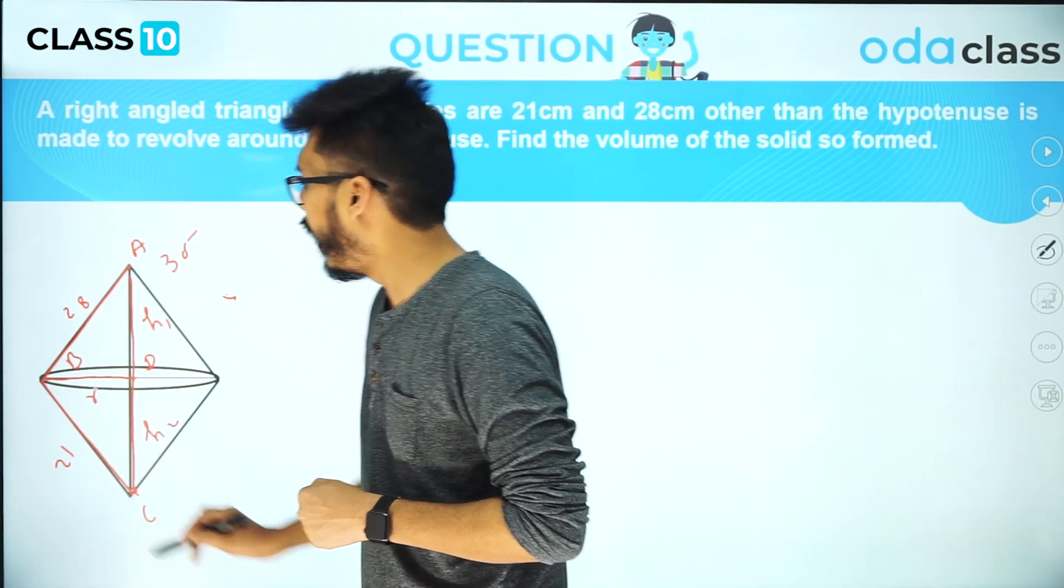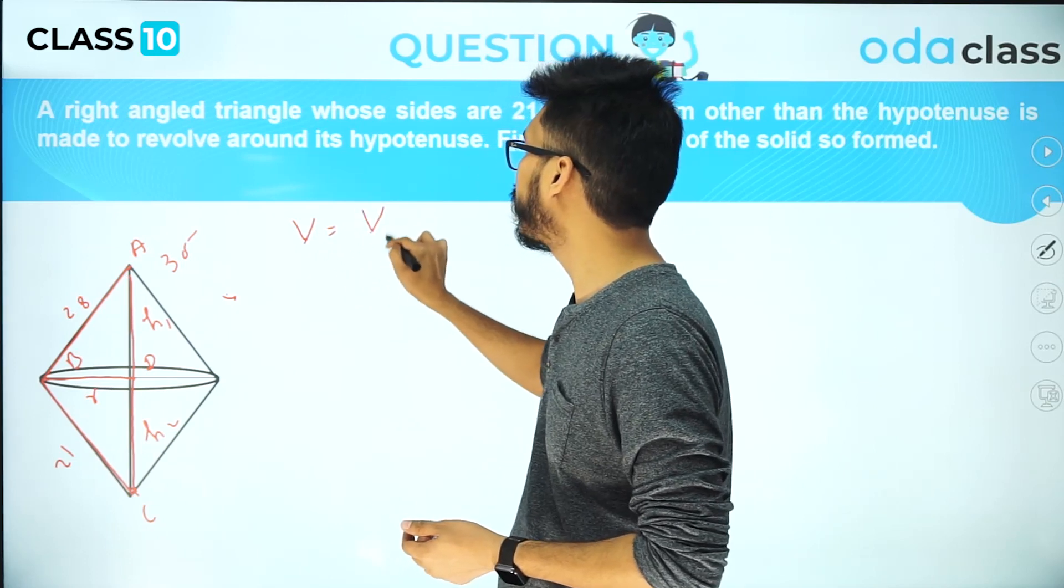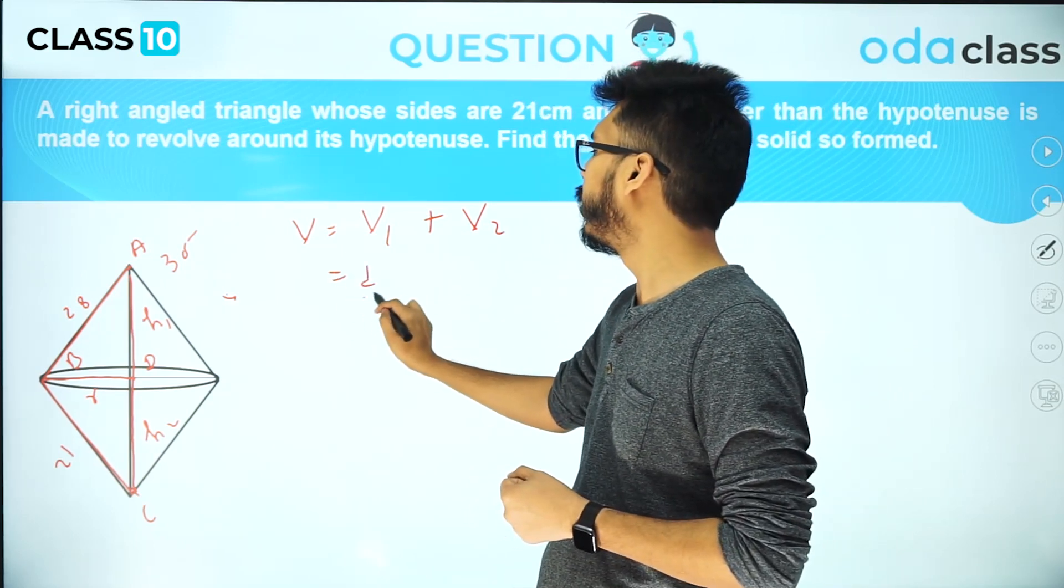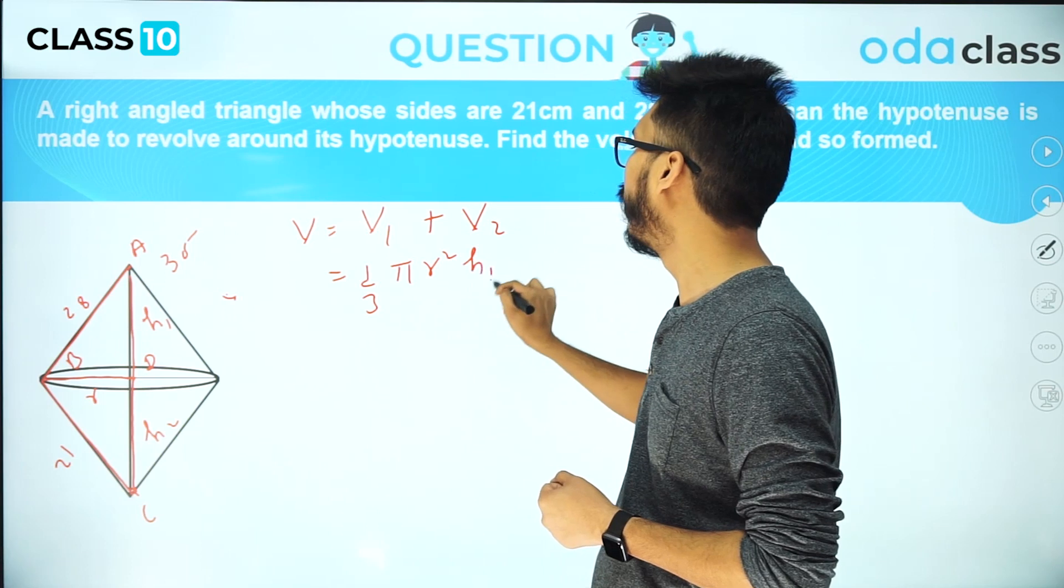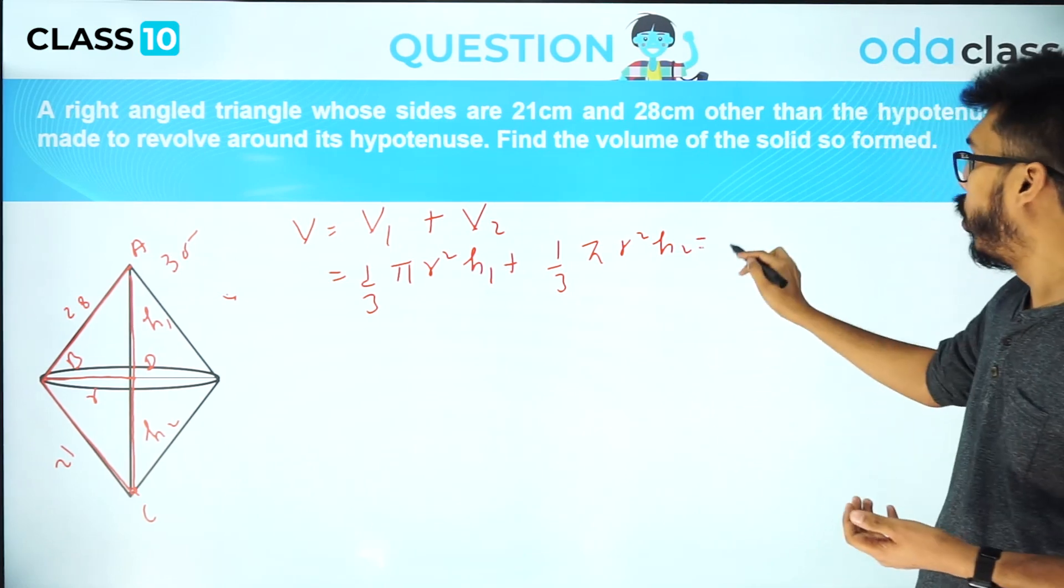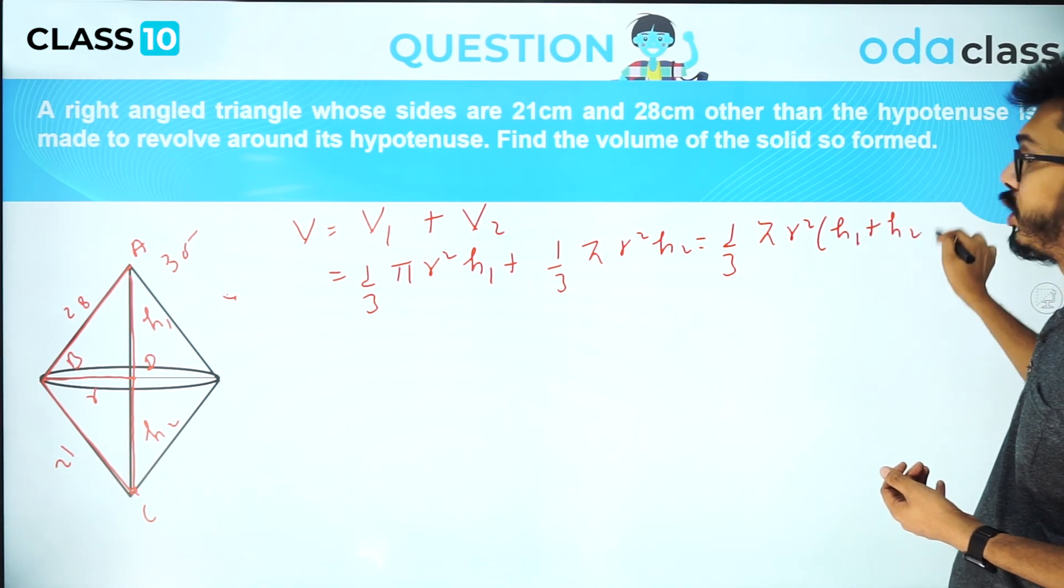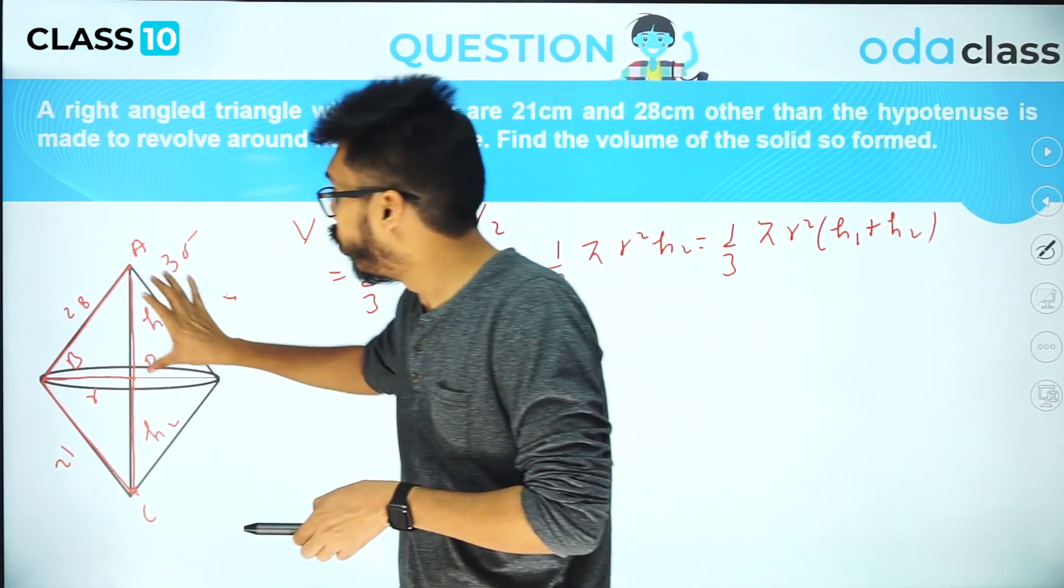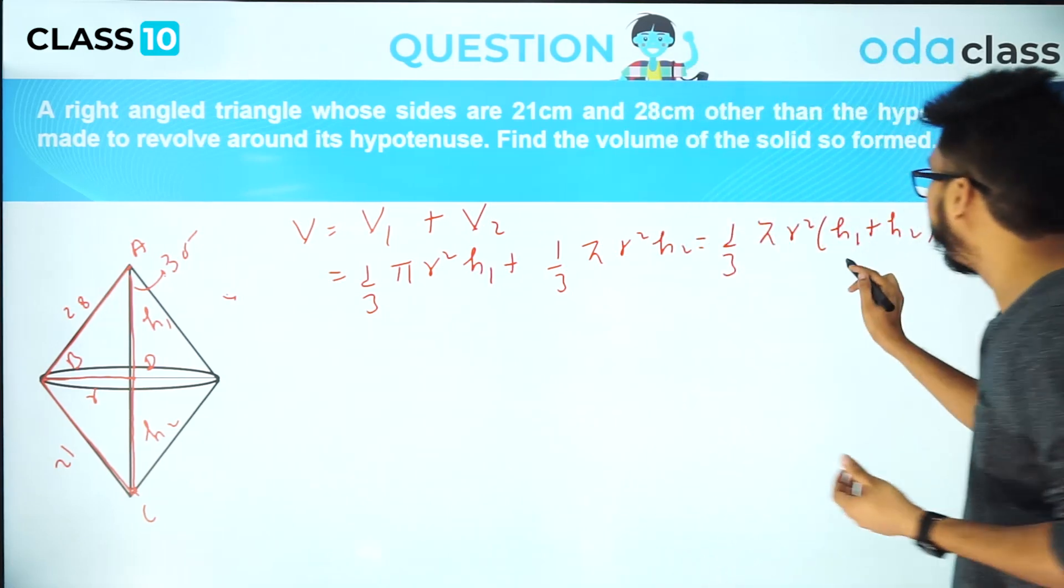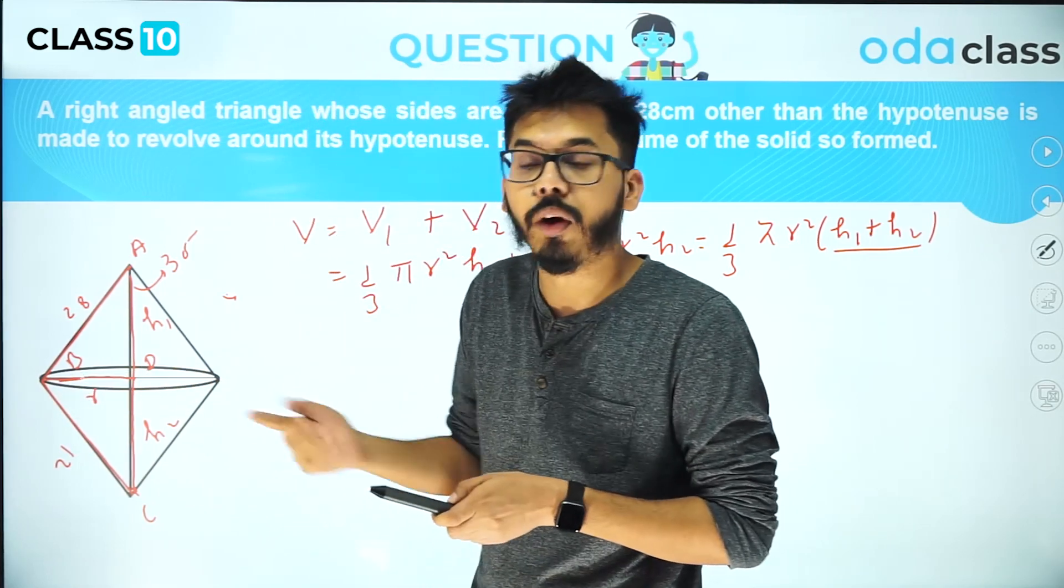The total volume of the solid will be volume of first cone plus volume of second cone. Volume of first cone is 1/3 π r² h₁ plus 1/3 π r² h₂, which is 1/3 π r² (h₁ + h₂). You don't even have to find h₁ and h₂ because h₁ + h₂ is nothing but 35. Now our task is to find R, the radius.